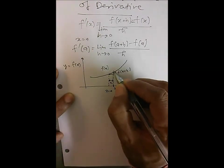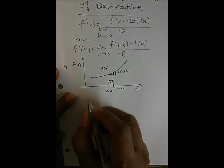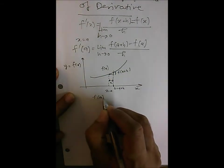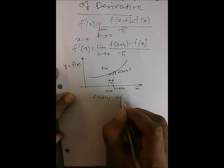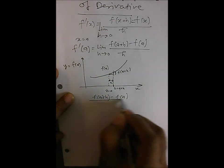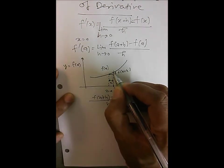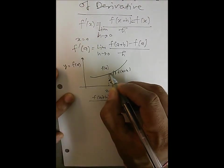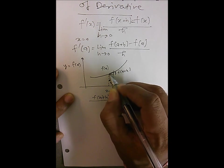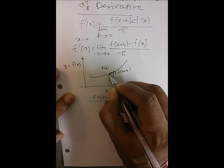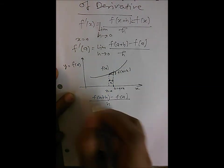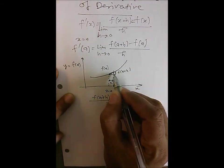Now if you take the ratio of these two — f(a+h) minus f(a) divided by h — then what you are actually seeing is the slope of the line joining from this point to this point.